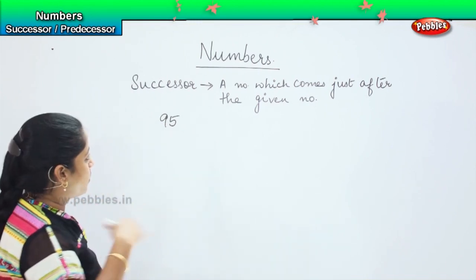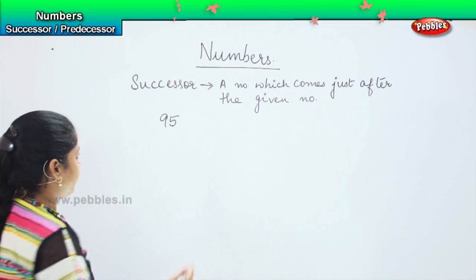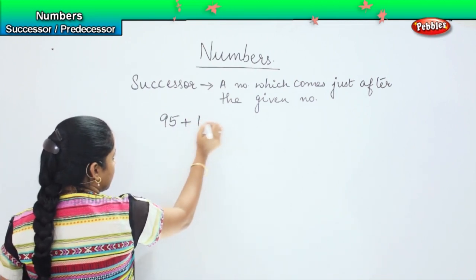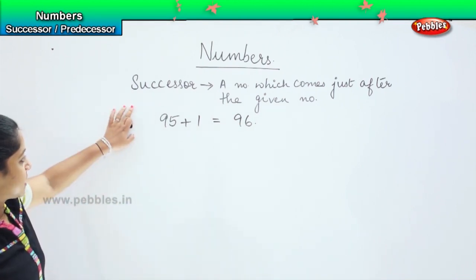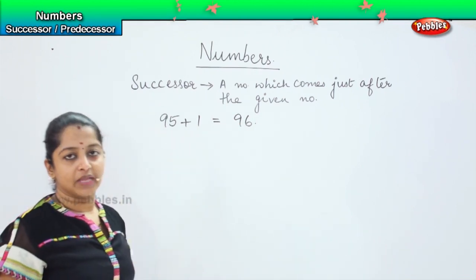So, what is the number which comes immediately just after 95? What you have to do is you have to add 1. So after 95, we have 96. The successor of 95 is 96.